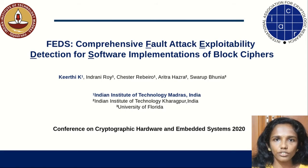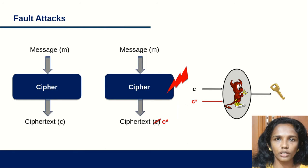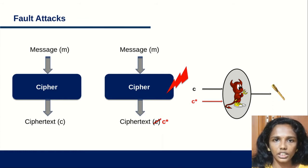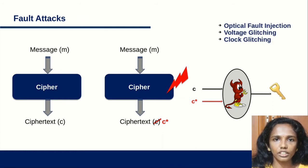Moving towards the details of the presentation, fault injection attack is one of the most powerful forms of cryptanalytic attack on a cipher. A single precisely injected fault during the execution of a cipher can help to retrieve the secret key in a few milliseconds. Fault injection is easy with the help of techniques like optical fault injection, voltage glitching, clock glitching, etc.